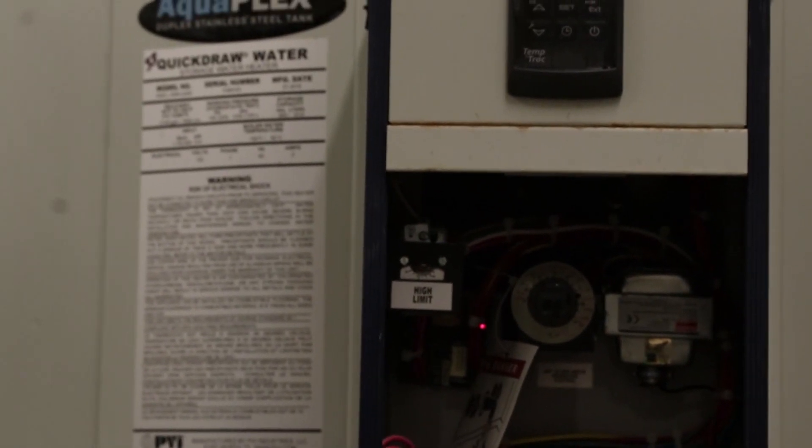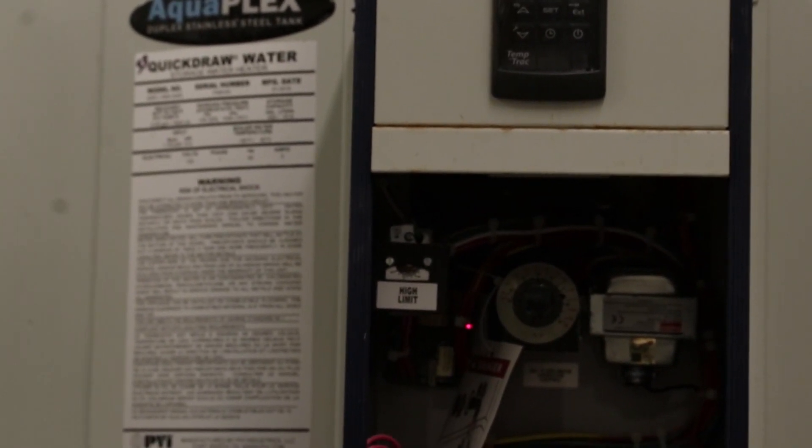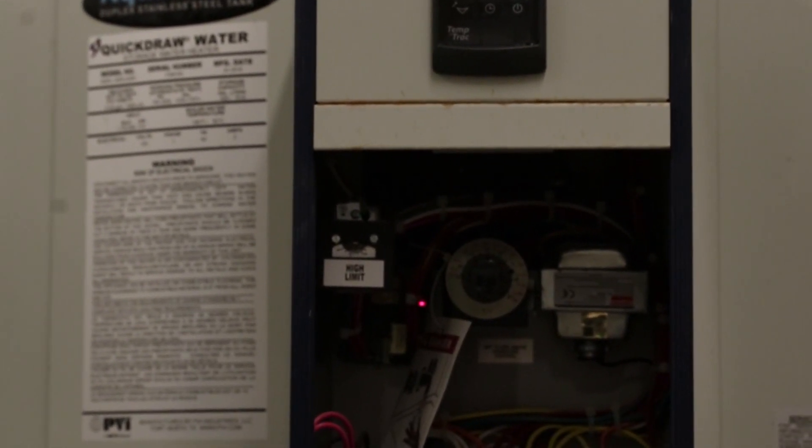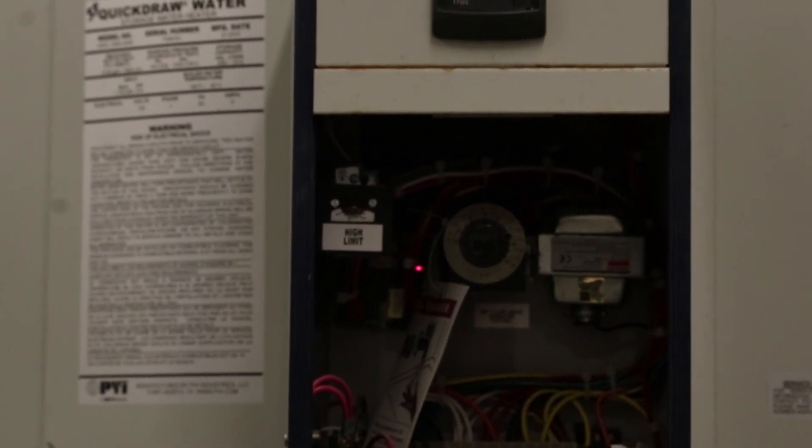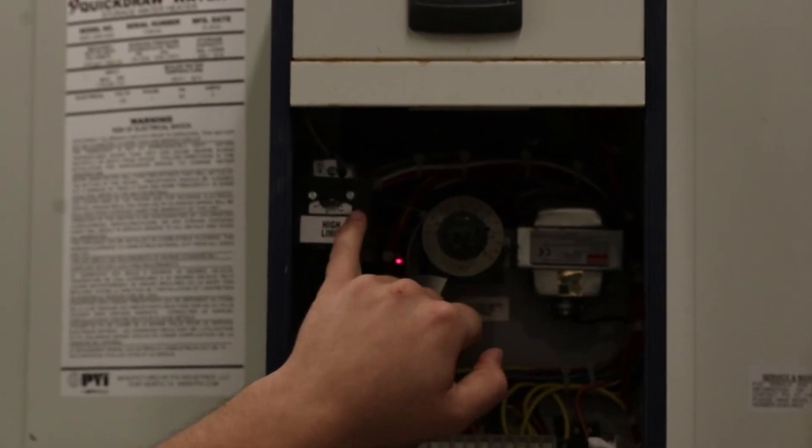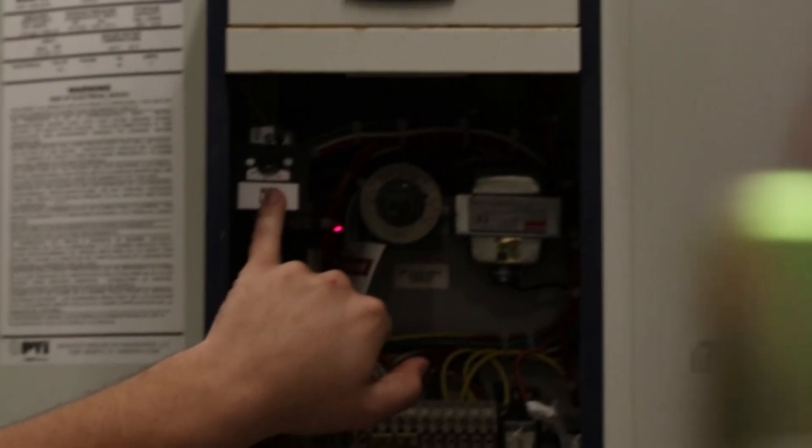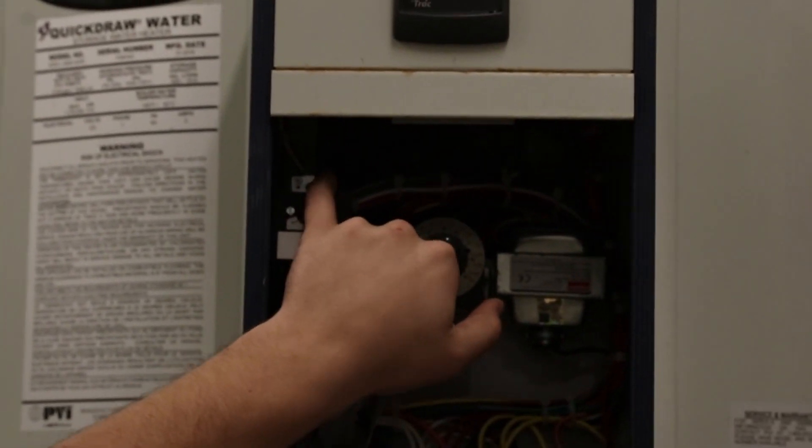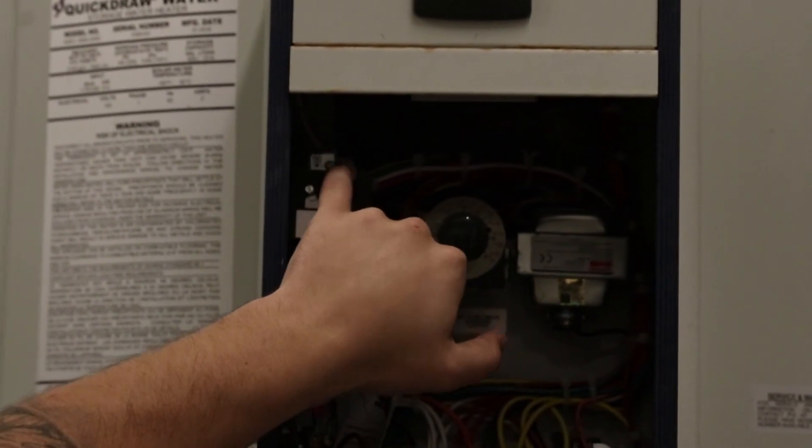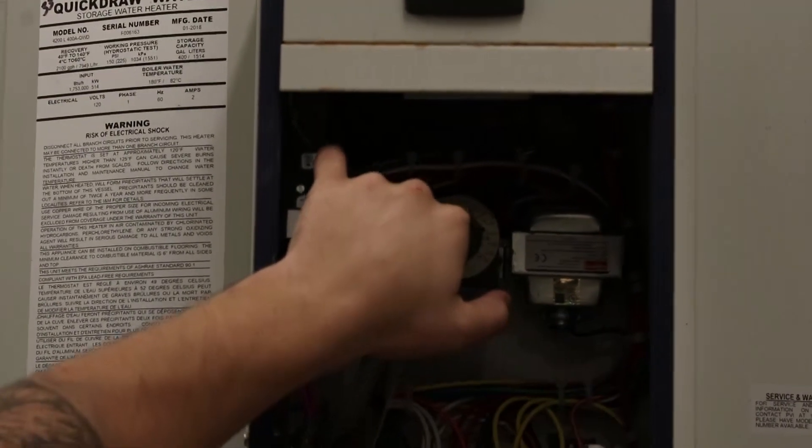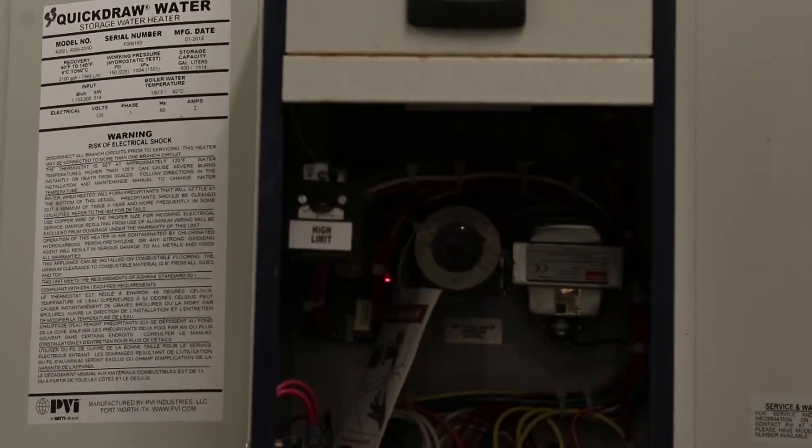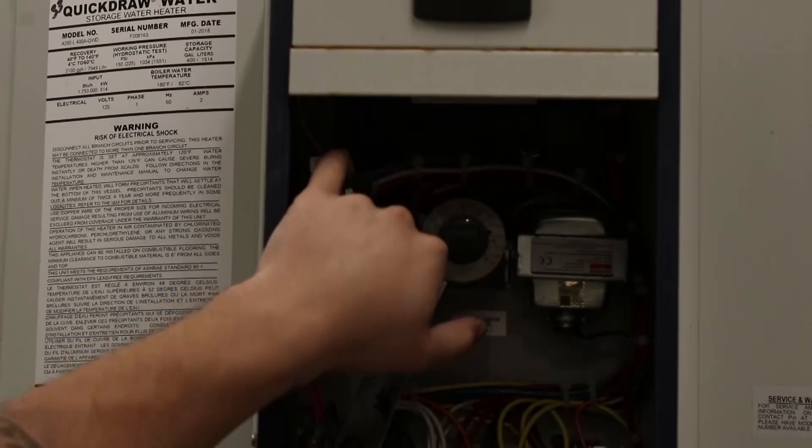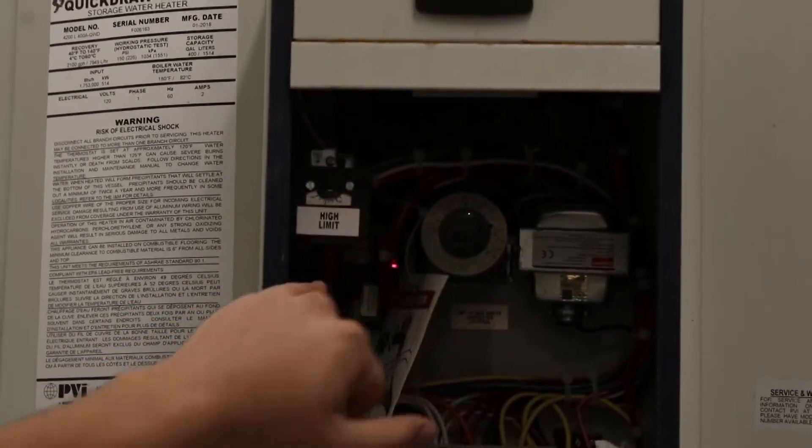If there's any type of malfunction of any of the controls or components that will cause this water heater to overheat the water in the tank, then this control will trip. It's a manual reset type, so it will not allow the water heater to operate again until someone comes in and presses this button. It's a green button there. Right now, there's no resistance on the button. It doesn't click because the control is not tripped. If it is tripped, you'll press this button, you'll get a click, and the control will reset.